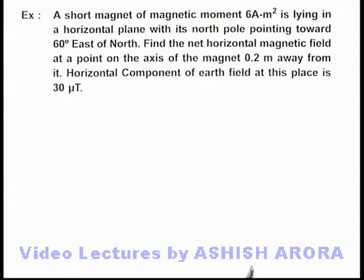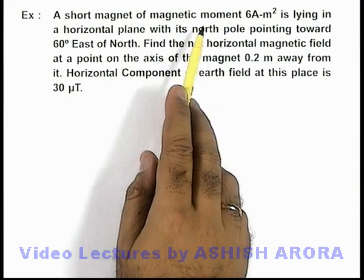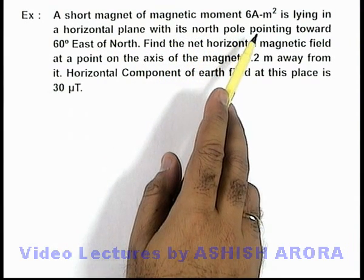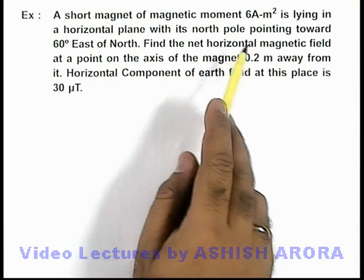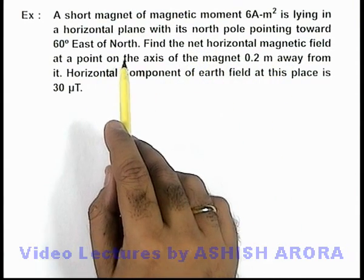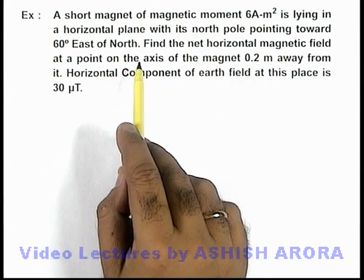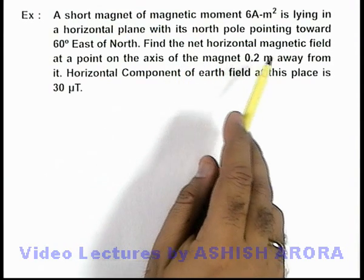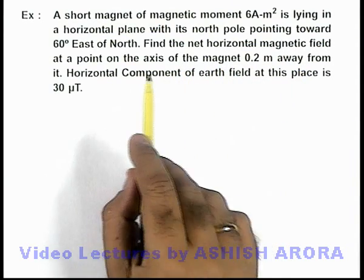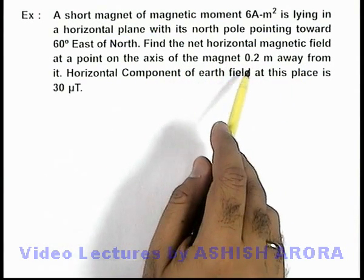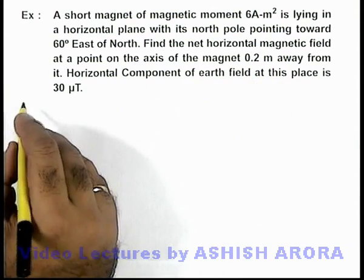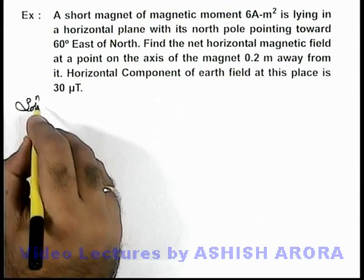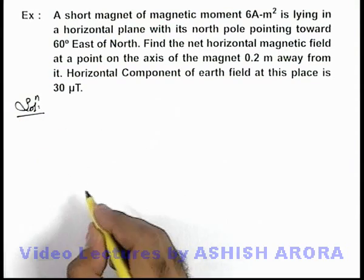In this example we are given that a short magnet of magnetic moment 6A·m² is lying in a horizontal plane with its north pole pointing towards 60° east of north. We are required to find the net horizontal magnetic field at a point on the axis of the magnet 0.2 meters away from it. The horizontal component of Earth's field at this place is 30 micro tesla.